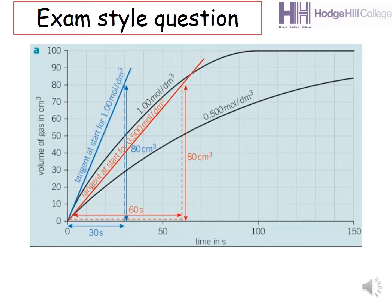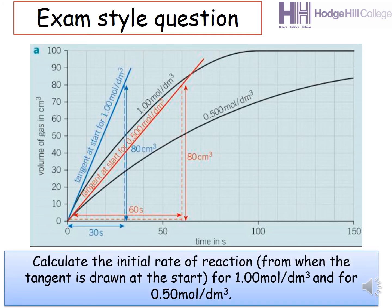Here's another exam question for you to try. This one is slightly different from the one before. In this case, you're required to calculate the initial rate of reaction. Now, the question reads, calculate the initial rate of reaction from when the tangent is drawn at the start for 1.00 mole per dm cube and for 0.50 mole per dm cube. Pause the video, observe the graph carefully, and have a go.